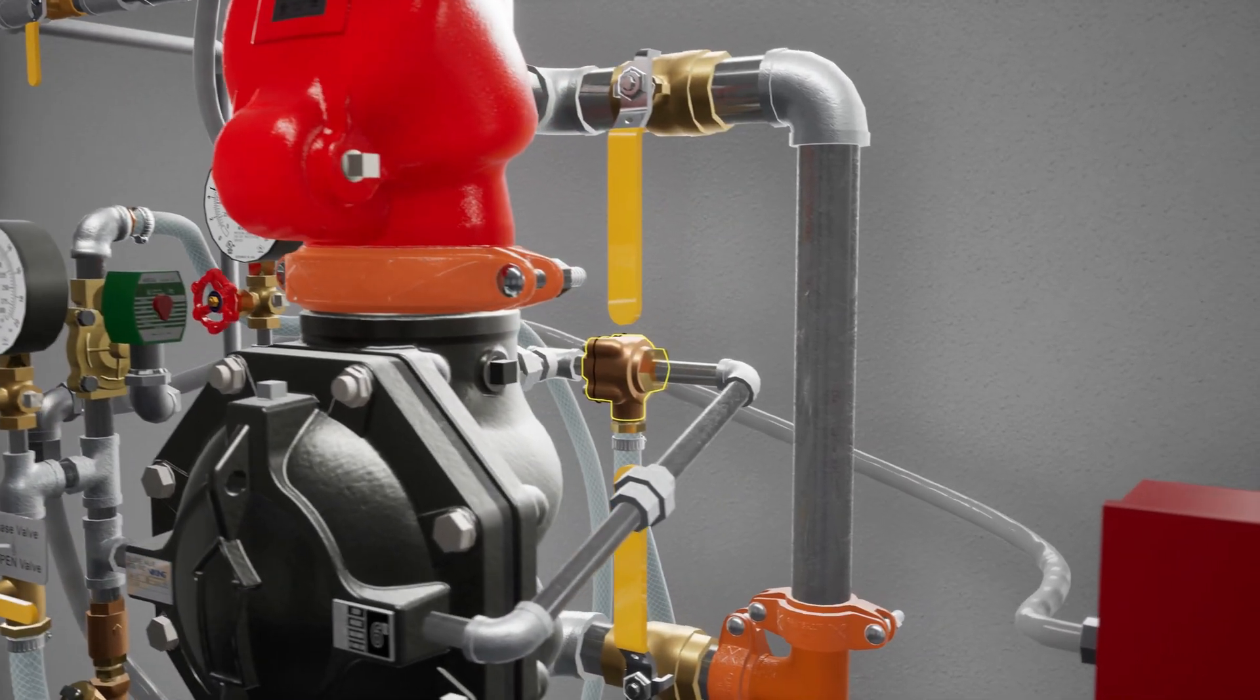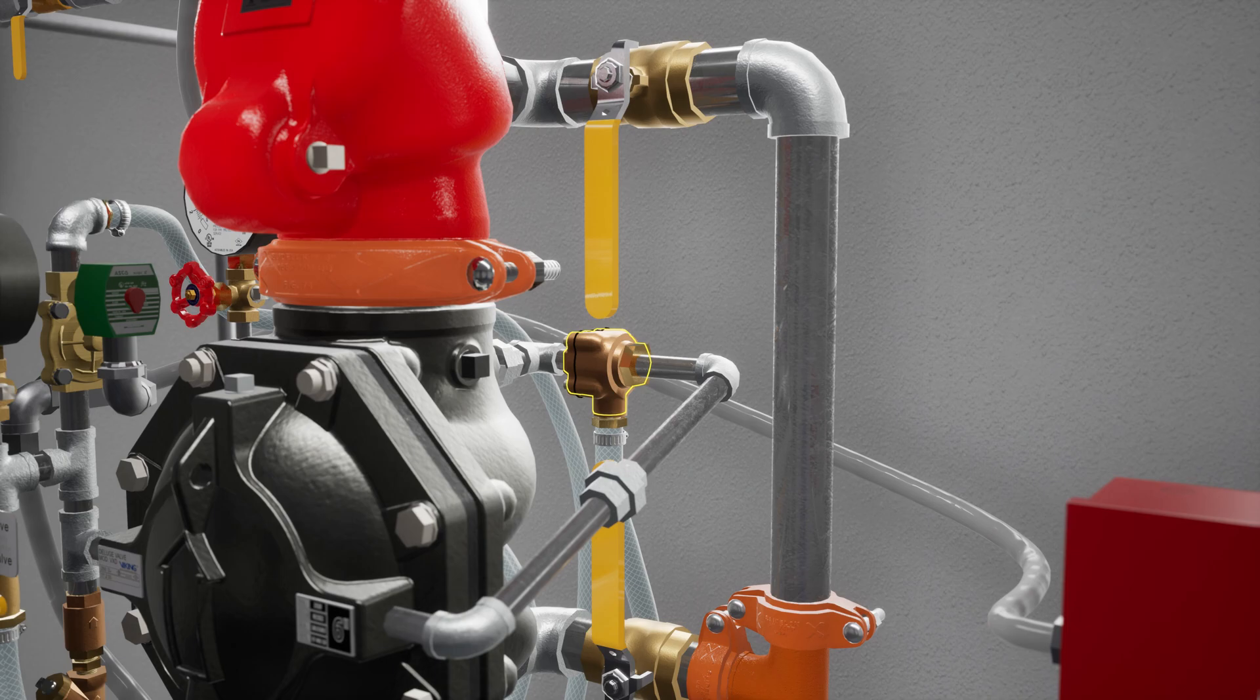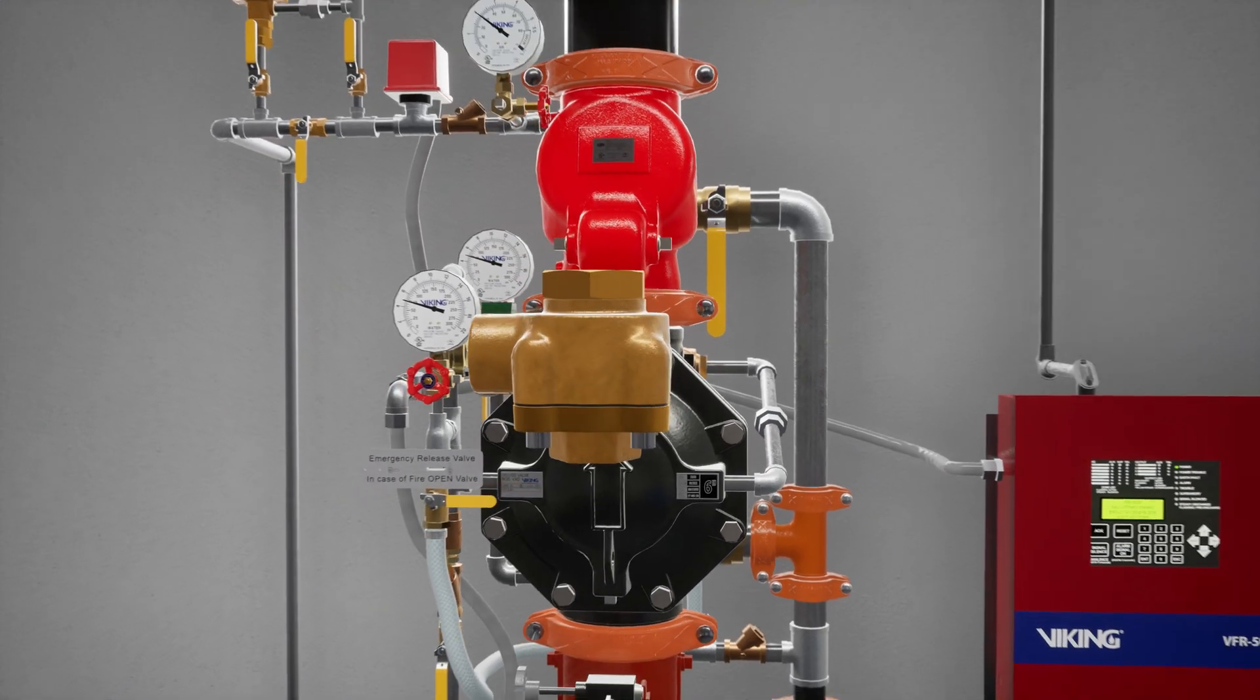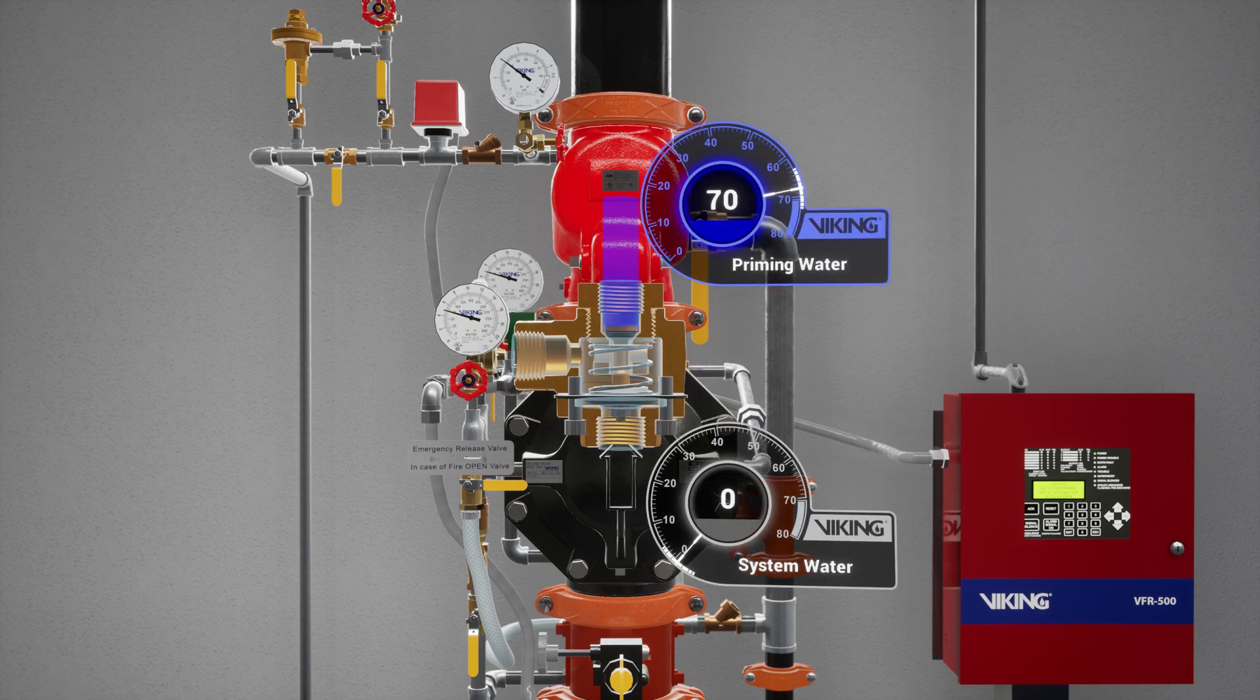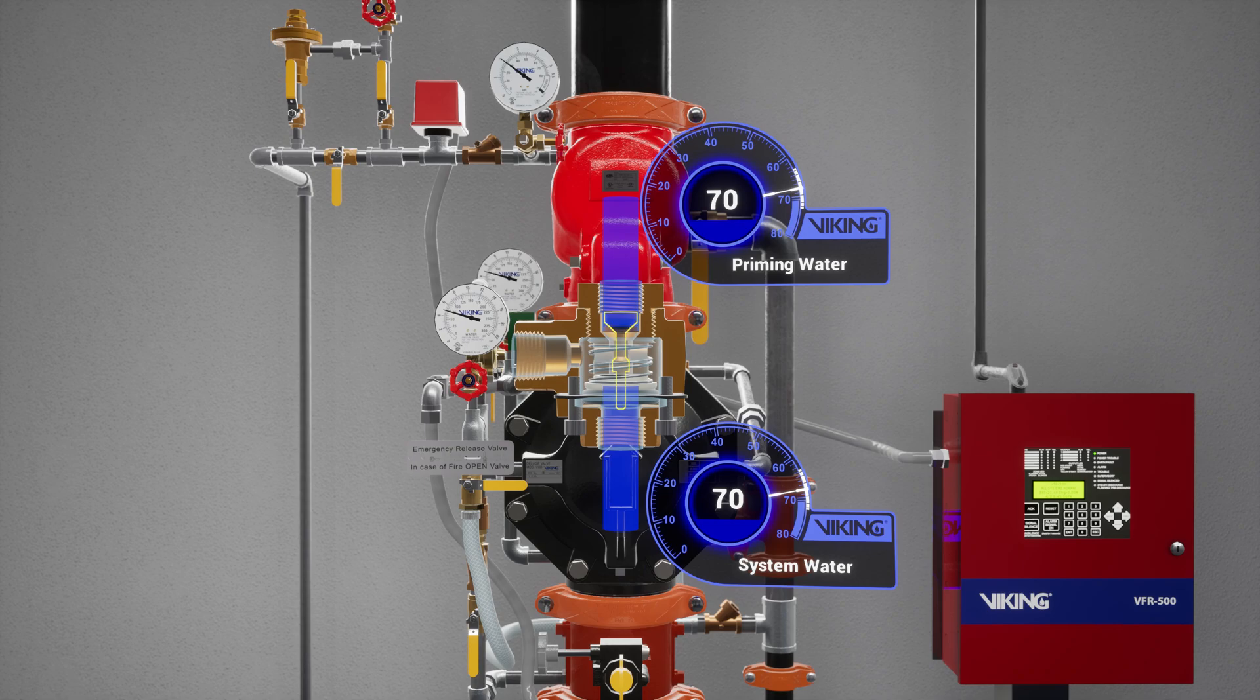Following the trim off the prime chamber is the pressure operated relief valve or PORV. The PORV is a device that ensures the valve remains in an open state while water is flowing through the valve. When water is directed to the sensing side of the PORV, the push rod is forced open. Priming water is then directed to the open drain, preventing the priming chamber from repressurizing.